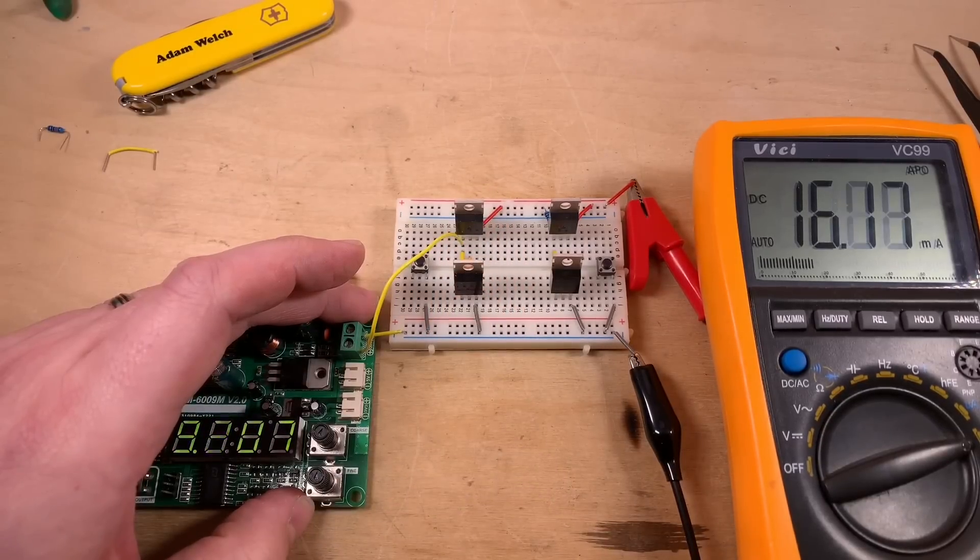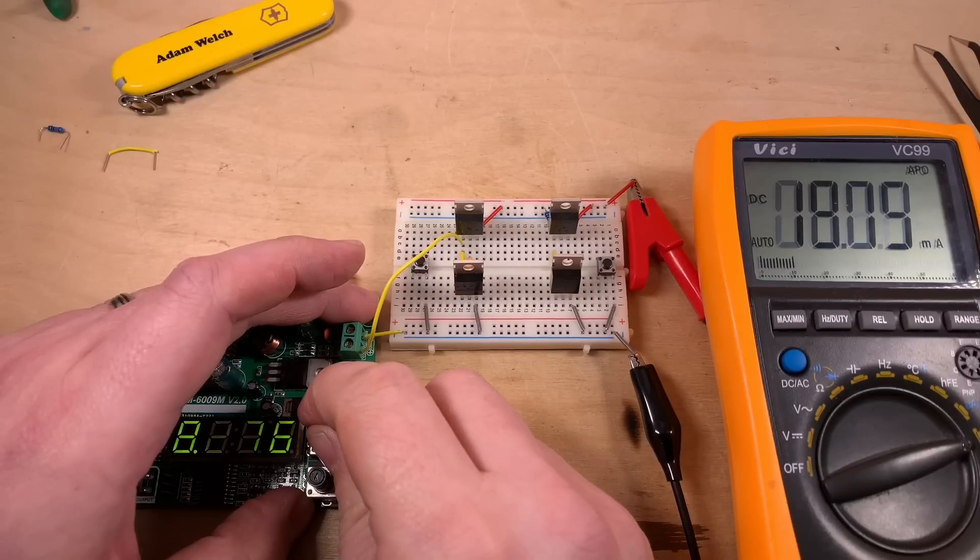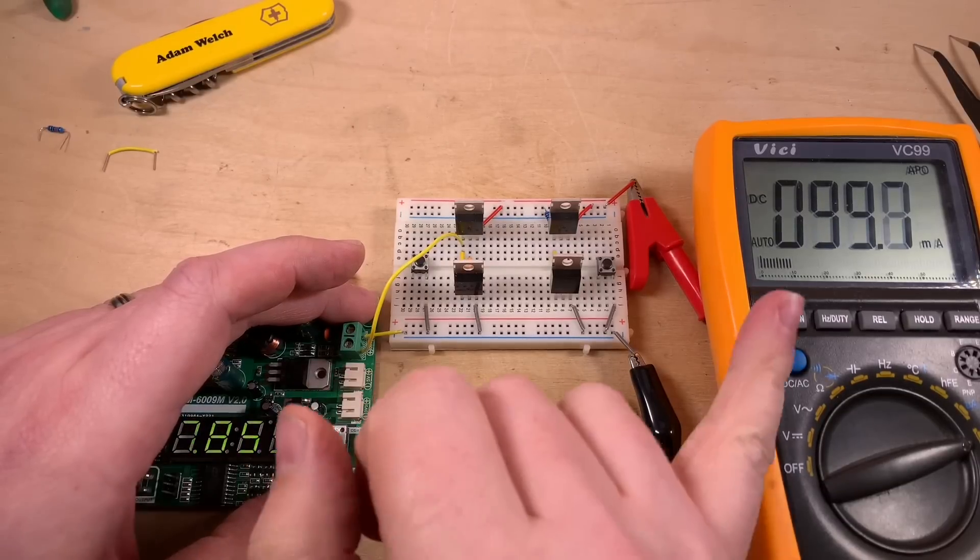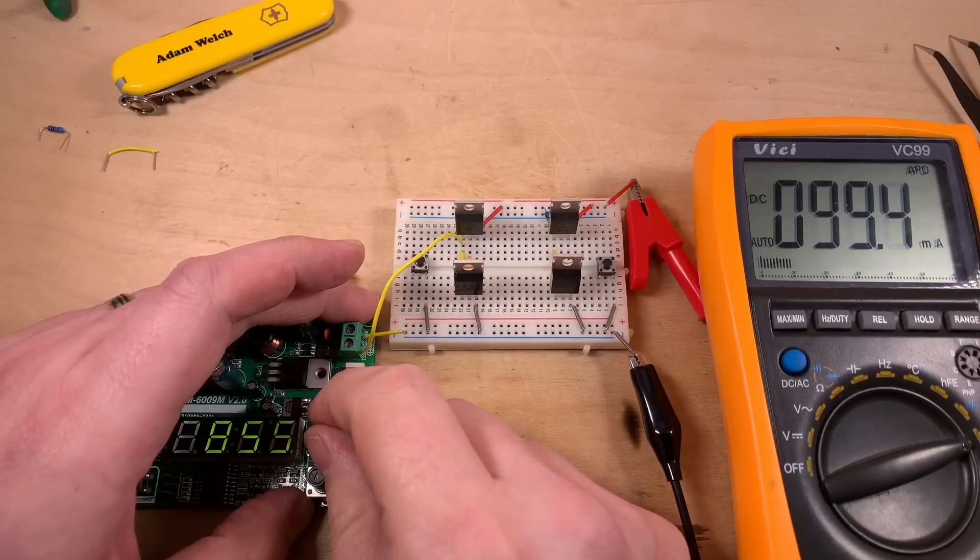Now we can see we're starting to see current flowing. 11, 12 milliamps flowing directly from positive to negative through two partially on MOSFETs and if I drop that down just a little bit further we're straight up to 100 milliamps.